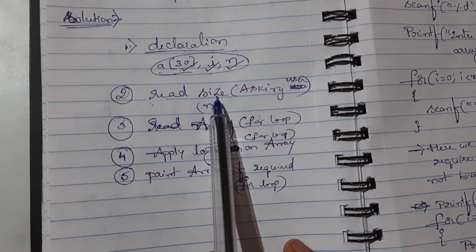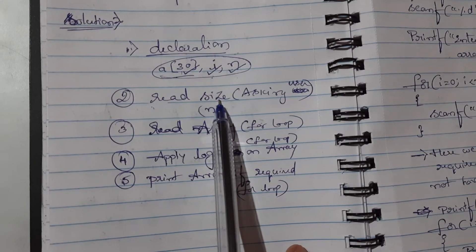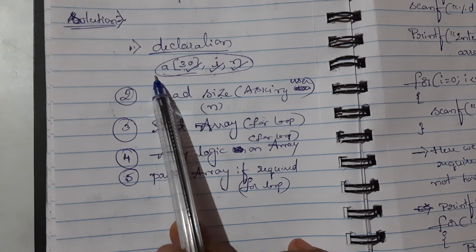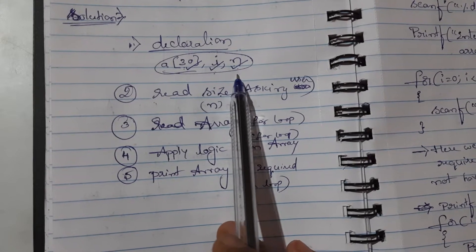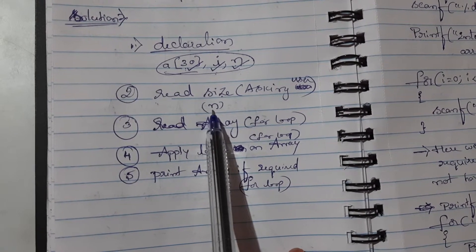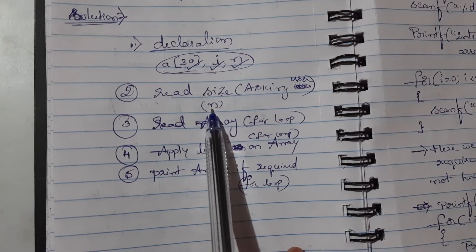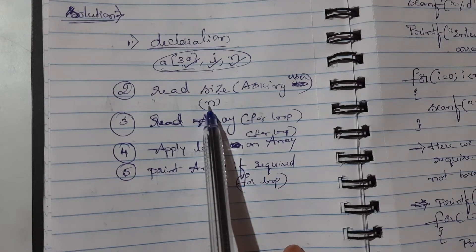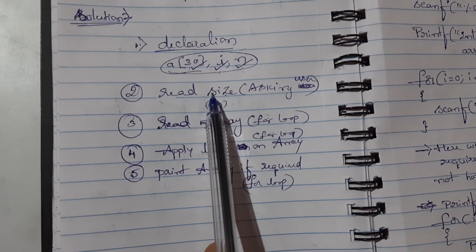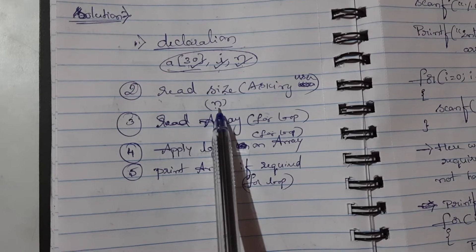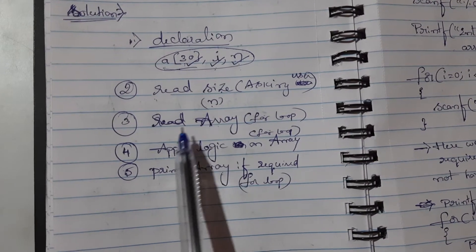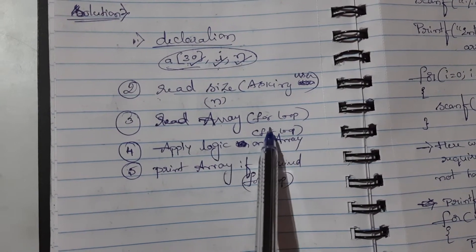In any array program, the first thing is to read the size. 'a' is the array, while 'i' and 'n' are normal variables. Reading the size 'n' means reading a normal variable — same as in normal programs, no for loop needed. But the third step is reading the array, for which we must use a for loop.